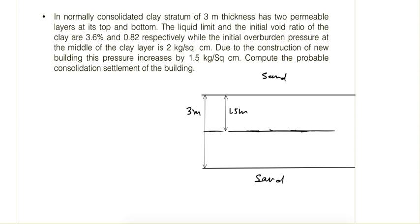Let's see some problems based upon the consolidation theory. This is the first problem: it is in a normally consolidated clay, with a clay stratum of 3 meter thickness. It has two permeable layers at its top and bottom, so sand layers are there at top and bottom for double drainage.